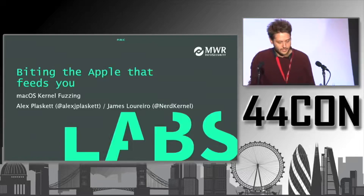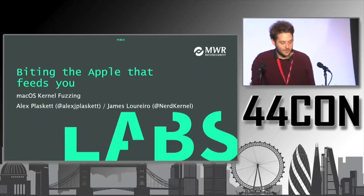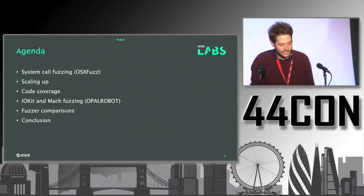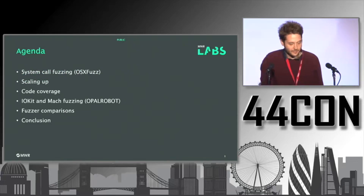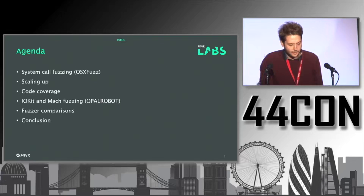Thanks everyone. This is Mac OS kernel fuzzing. I'm James and Alex is down there. Quick agenda: we're going to go through a system called fuzzing, our attempts to scale up the fuzzing, our approach to getting code coverage from Mac OS as part of the fuzzing. Then Alex is going to go over IOKit and Mac fuzzing, comparisons between our two fuzzers, conclusions, and questions at the end.